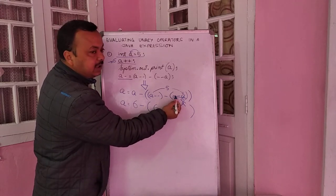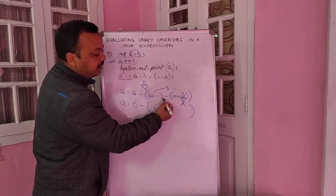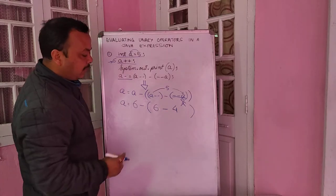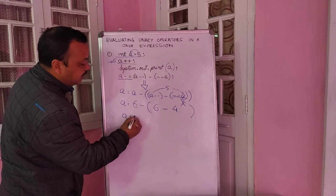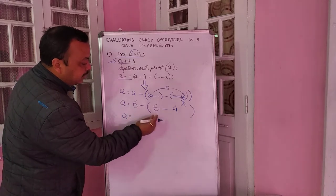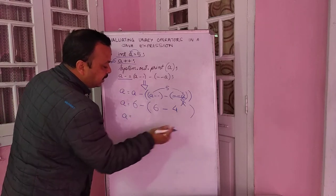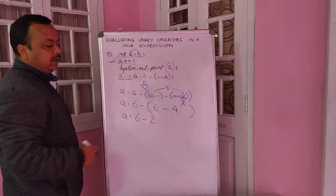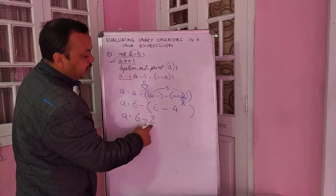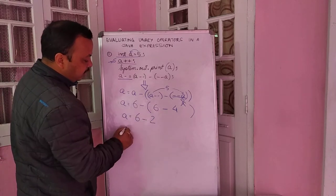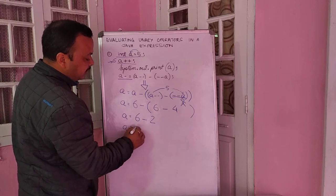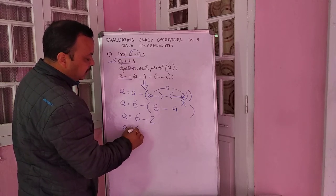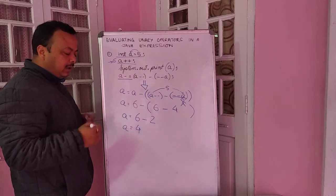So we have 6 minus 4, which is inside the pair of parentheses, giving us 2. The answer will be a equal to 6 minus 2, which is 4.